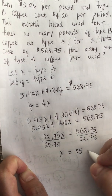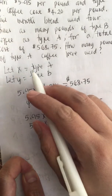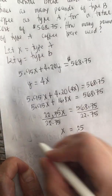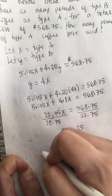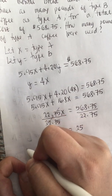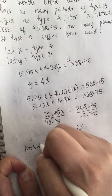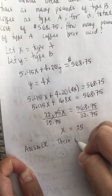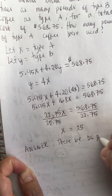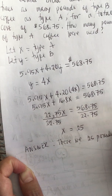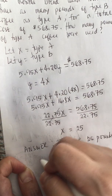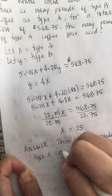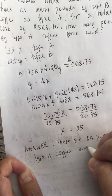We let x equal Type A, and we were asked for Type A — so the answer is 25 pounds. There were 25 pounds of Type A coffee used.